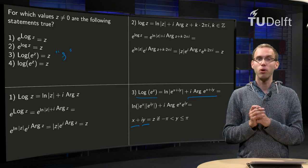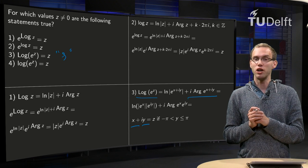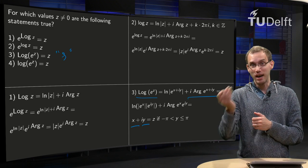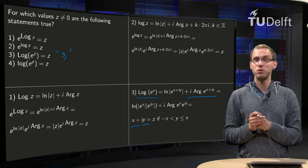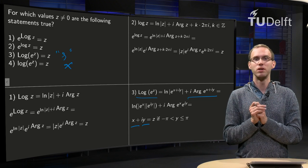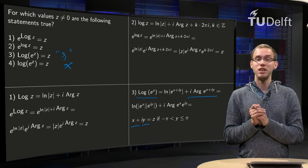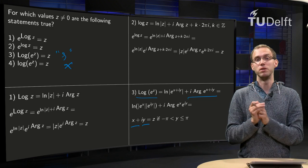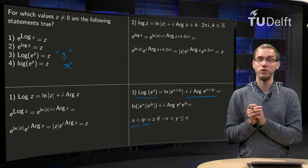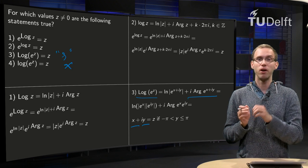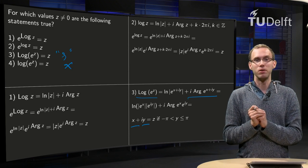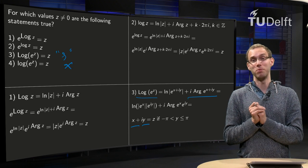The last statement — small log of e to the power z — is a disaster, because the small log is multivalued, so the left-hand side is multivalued while the right-hand side is single-valued; they can never be equal, so this statement will never hold. This gives us a clear example that some statements concerning the log hold and others do not. If you are working with the log, always go back to the definition and be careful, because your familiar rules may not hold anymore.